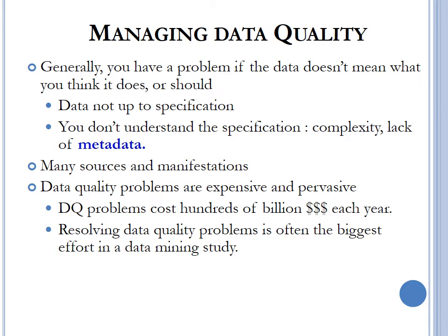In managing data quality, an issue that may affect quality is having many sources and many manifestations of the same data. A popular example is having multiple systems that store client data and having several records for the same client with slightly different variations. Data quality problems are expensive and pervasive — they cost companies a lot of money per year, and resolving data quality problems is often the biggest effort in performing a data mining exercise.